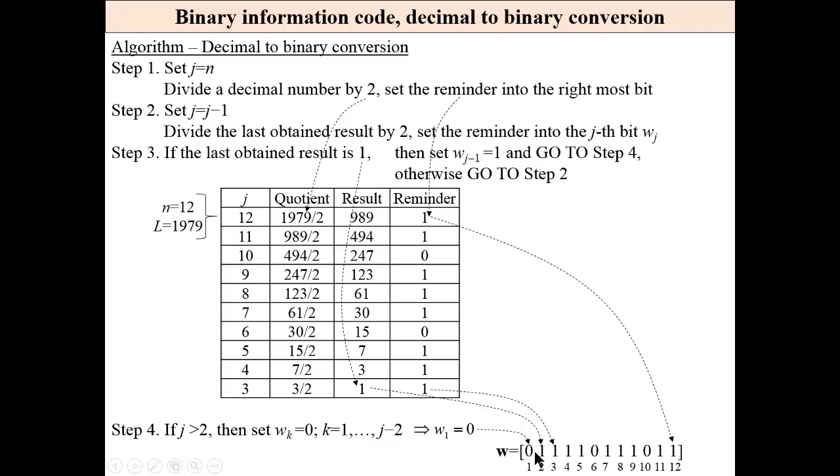In other words, we have to supplement the code word with zeros at the left side such that the code word length of n is reached.